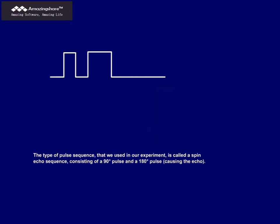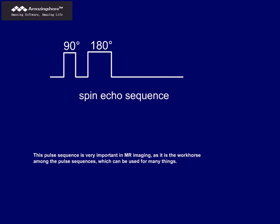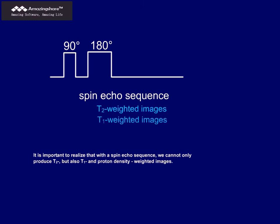The type of pulse sequence that we used in our experiment is called a spin echo sequence, consisting of a 90-degree pulse and a 180-degree pulse, causing the echo. This pulse sequence is very important in MR imaging, as it is the workhorse among the pulse sequences, which can be used for many things. It is important to realize that with a spin echo sequence, we can not only produce T2, but also T1 and proton density-weighted images. We will get to that a little later.